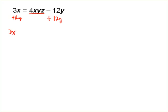That's going to give us 3x plus 12y equals 4xyz. Now we're still trying to get the z by itself, so we need to divide by those things that z is being multiplied by.